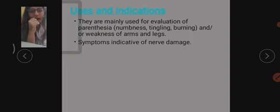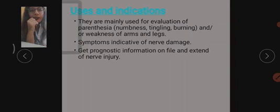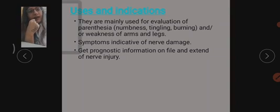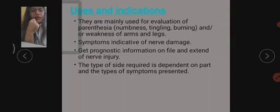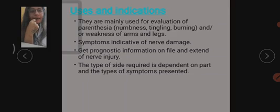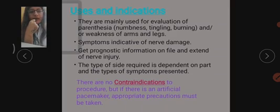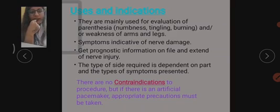NCV tests are used to check inflammation and to what extent a nerve is injured. NCV tests can also determine the extent of injury. The site at which the NCV test is done is completely dependent on the symptoms present. There are no basic contraindications to the NCV procedure, but if a patient has an artificial pacemaker, some precautions must be taken.